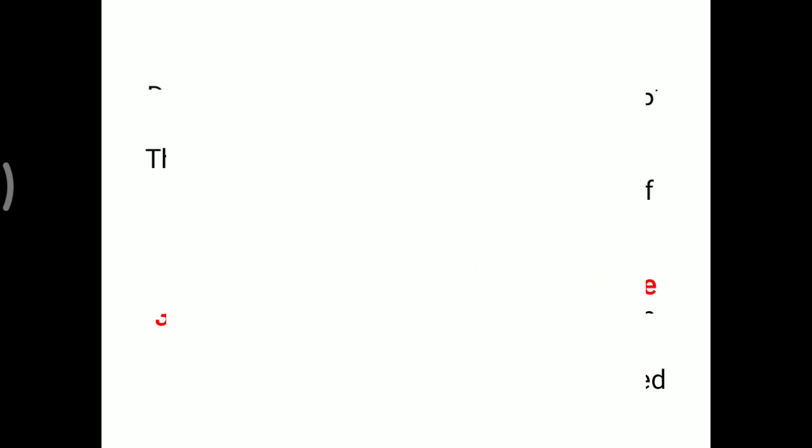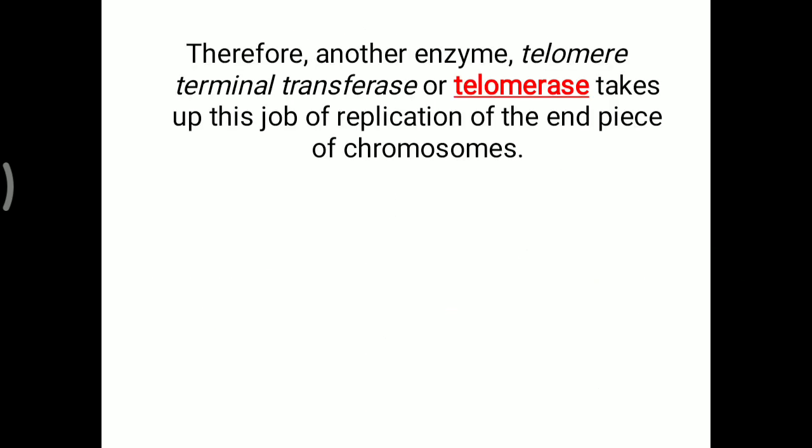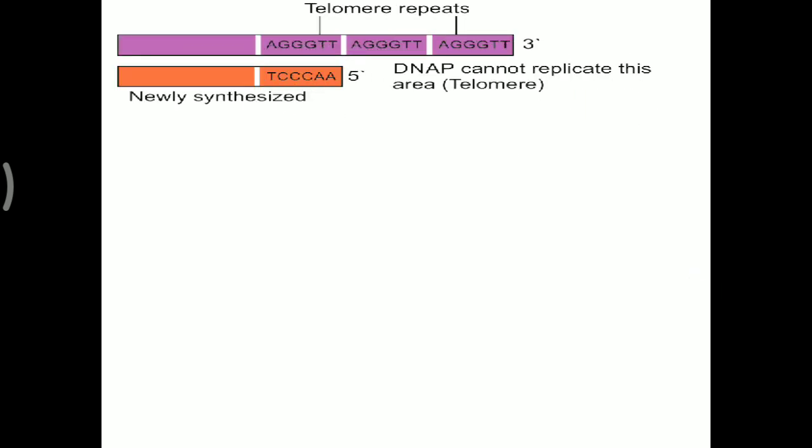Therefore, another enzyme — telomere terminal transferase, or telomerase — takes up the job of replication of the end piece of the chromosome. We will understand this with a picture. The telomere repeat that is present on the parent DNA strand — that telomere repeat sequence — is not able to be replicated onto the newly synthesized strand.